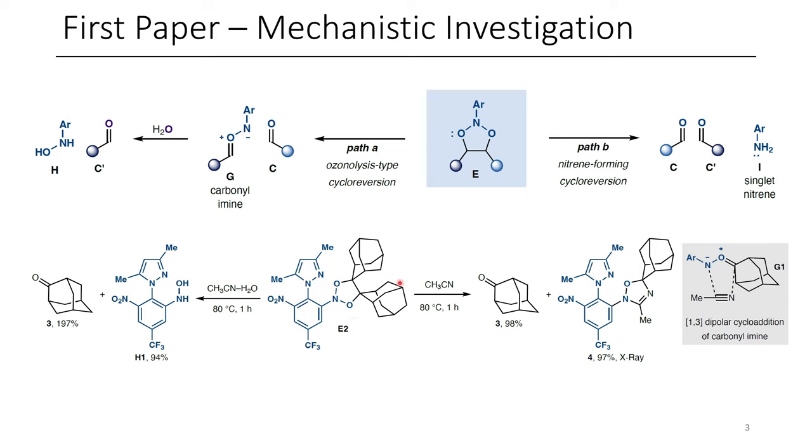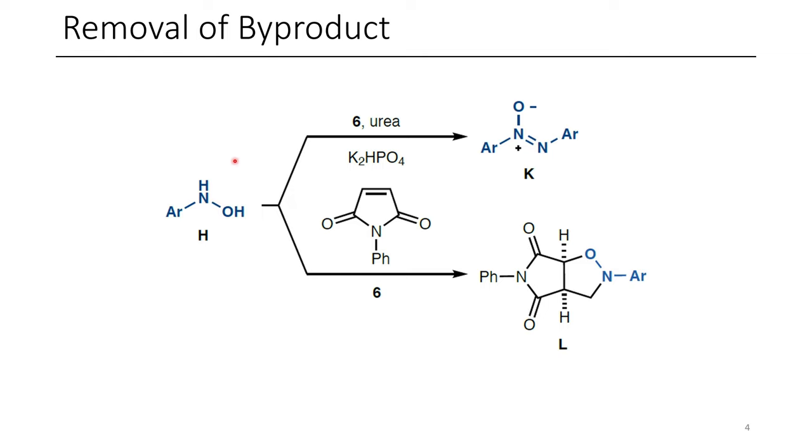Although the nitrene that forms here wasn't actually seen in any of their experiments, so some mechanistic investigation that they did is shown here. They form this adduct to this very sterically hindered alkene, which is now a five-membered ring. When the adduct was treated with acetonitrile water, they get two equivalents of the corresponding ketone, as well as the hydroxylamine. Although when they did this in the absence of water, it underwent a cycloaddition with the acetonitrile, which is something a nitrene might do, giving this interesting adduct, as well as one equivalent of the ketone. And so another really clever trick that they employed in this work was the removal of this hydroxylamine.